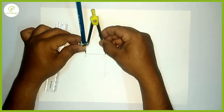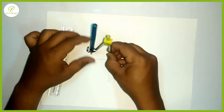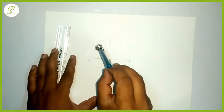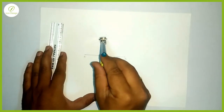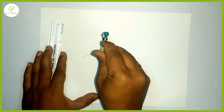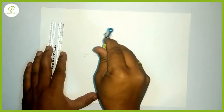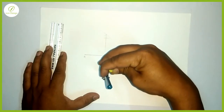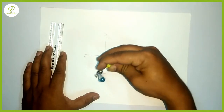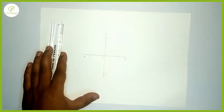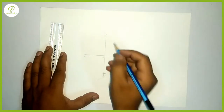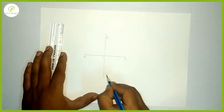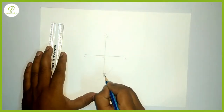Take a distance of AX in the divider and draw two arcs from both sides. Name them C and D.